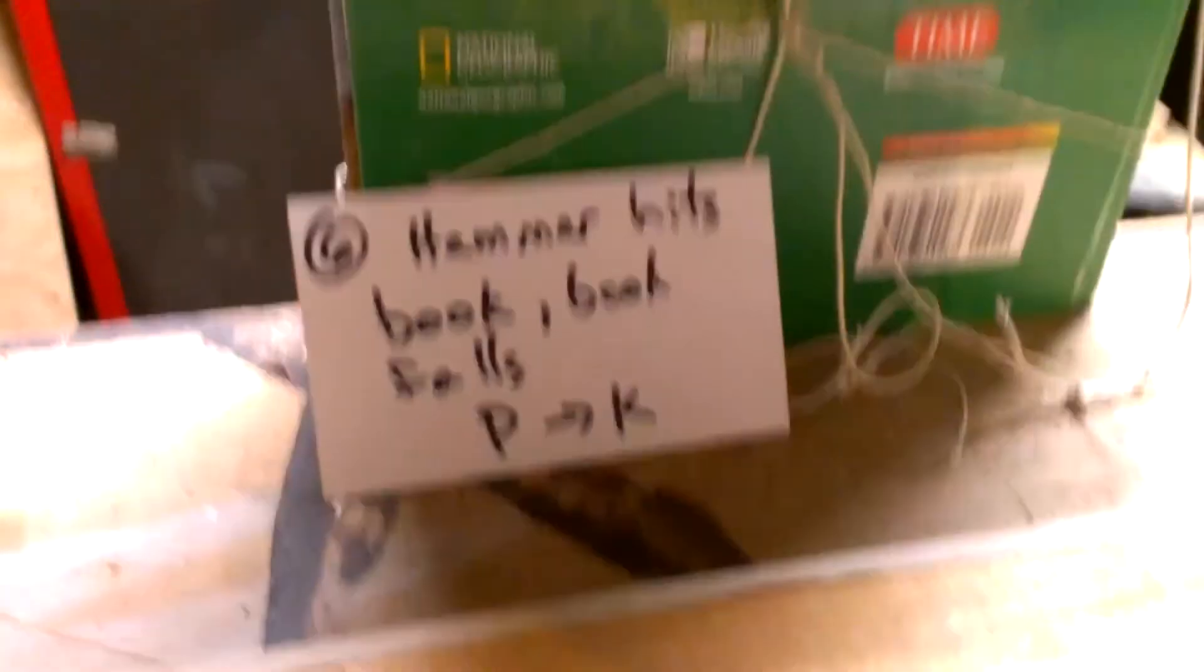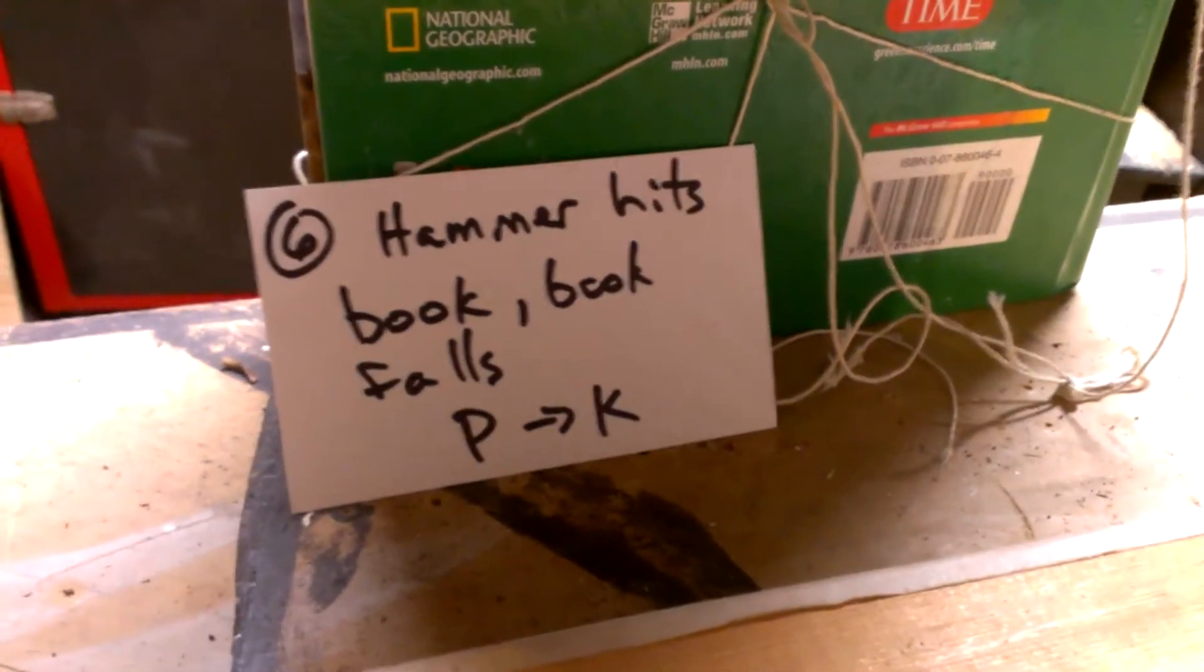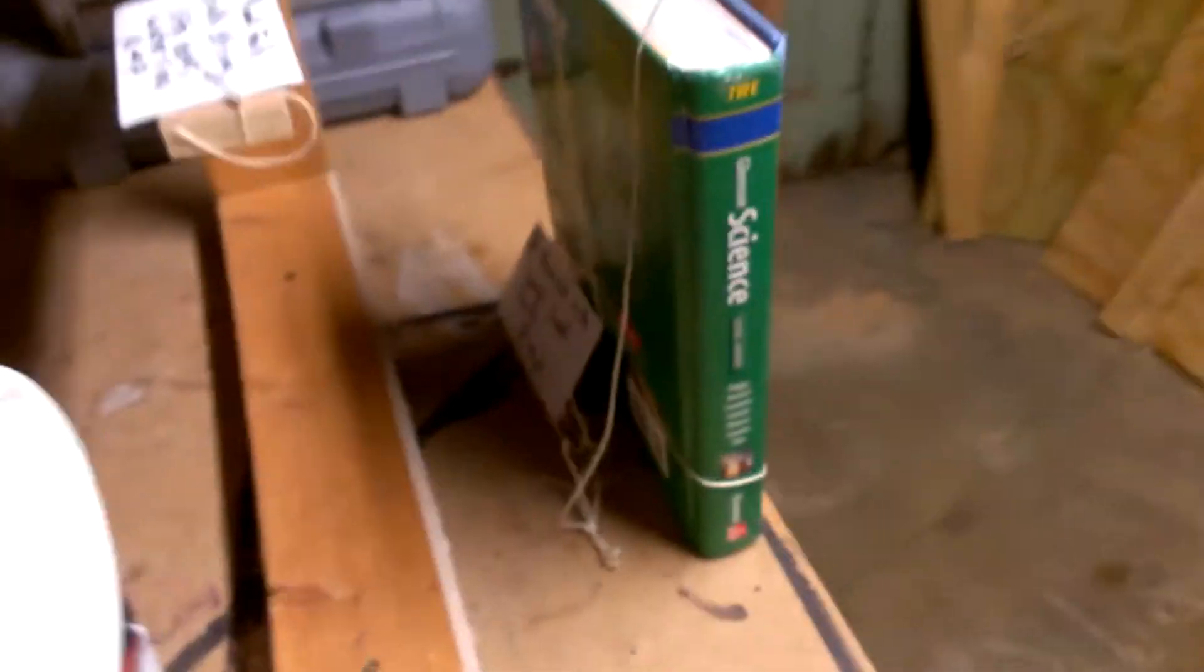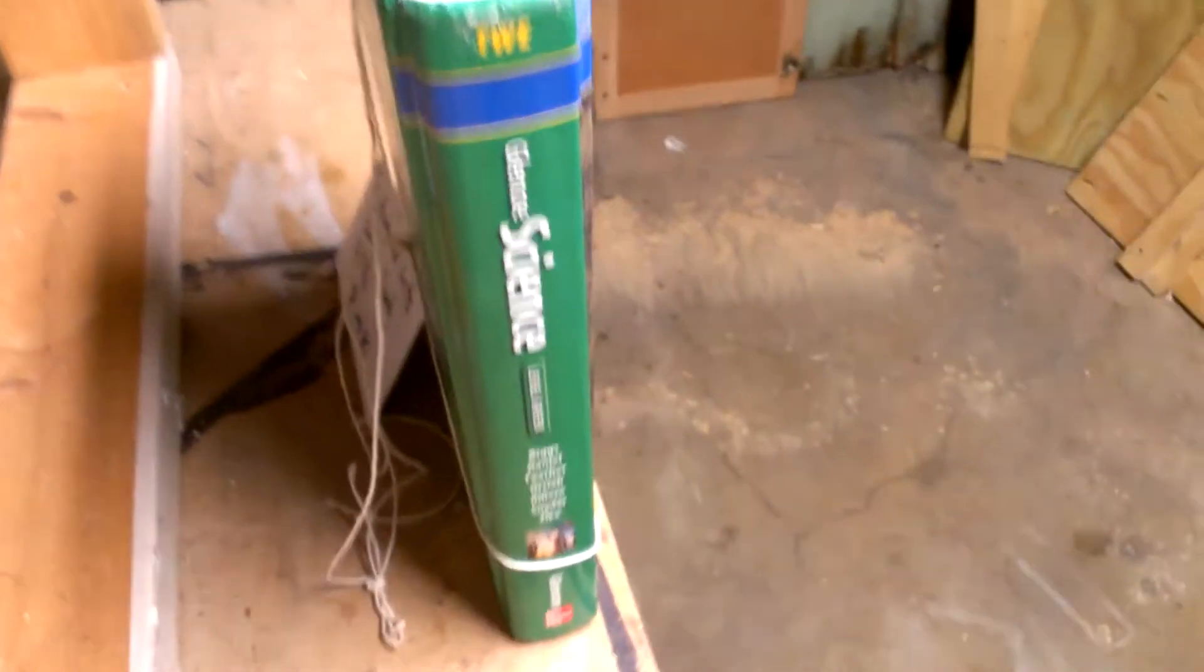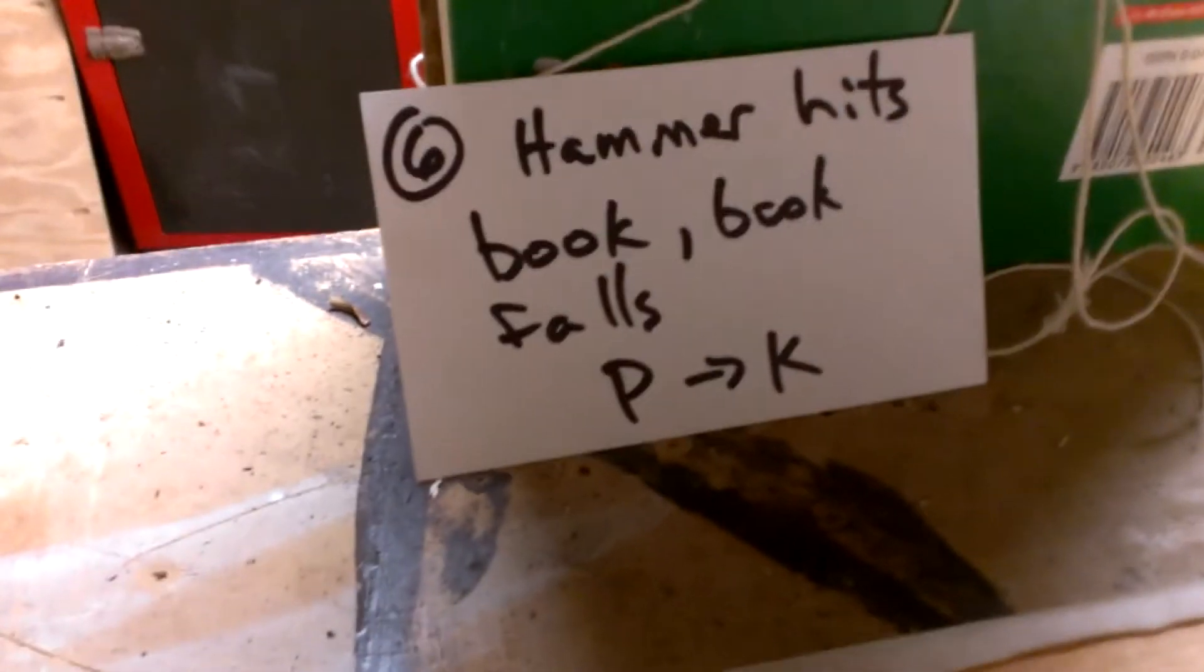As the hammer swings down, it should hit this science book that is balanced on the table. Now the science book currently has a lot of potential energy because it's balanced way up off the ground and ready to come crashing down to the floor. So that will be a lot of potential energy transferring to kinetic energy.